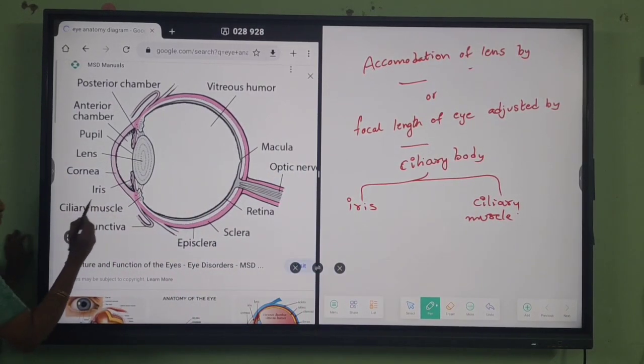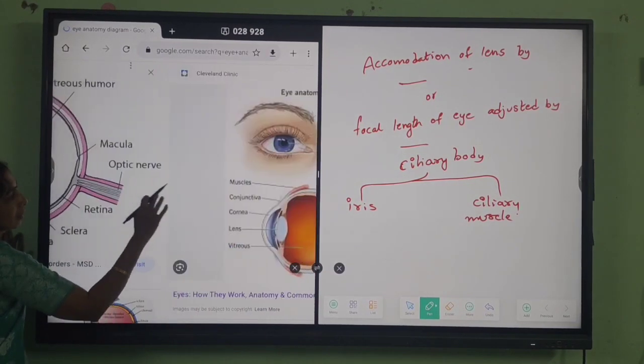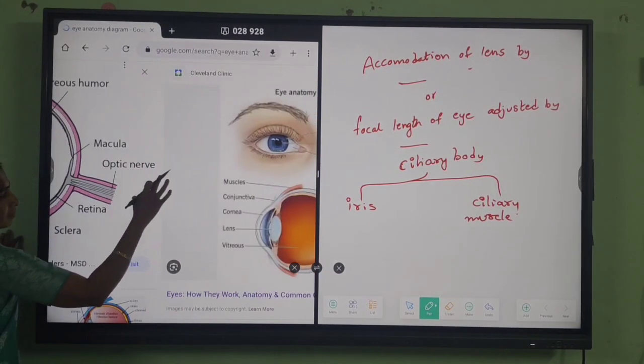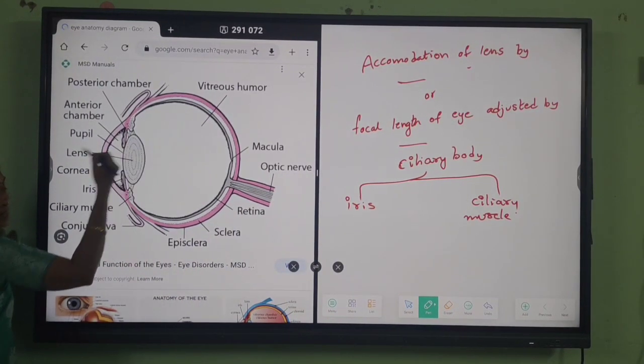Look at this ciliary muscle. This is the muscle which is accommodating the lens.